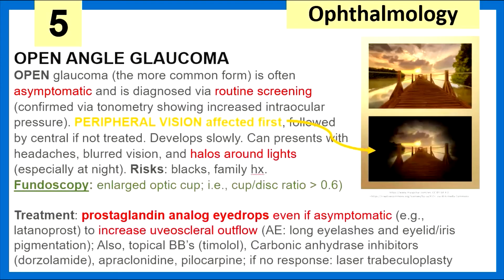Open-angle glaucoma — not as severe as the closed version, but this is the more common one. It's often asymptomatic and diagnosed via routine screening. Peripheral vision is affected first, and patients may complain of headaches, blurry vision, and halos around lights, especially at night. Blacks are especially prone to this condition. Fundoscopy reveals an enlarged optic cup with a cup-to-disc ratio of more than 0.6. We treat with prostaglandin analog eye drops, even if asymptomatic, to decrease uveoscleral outflow and prevent chronic damage.